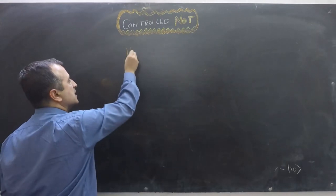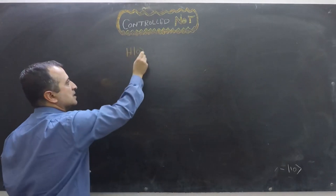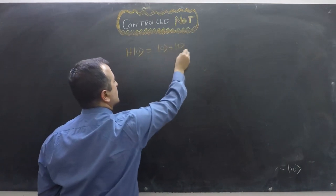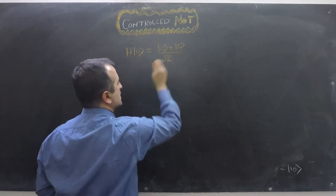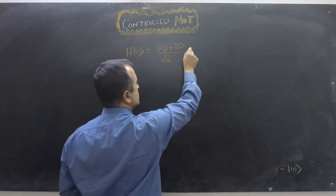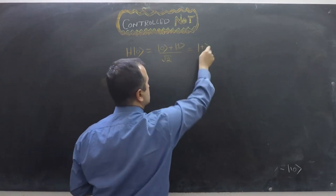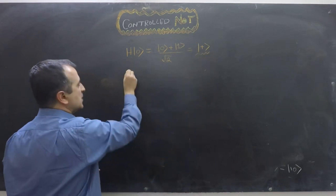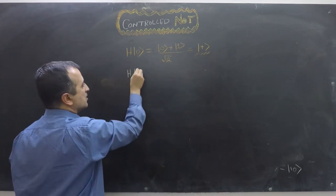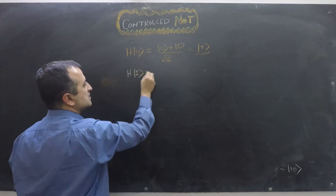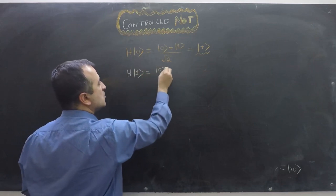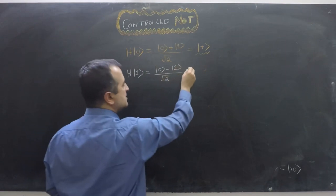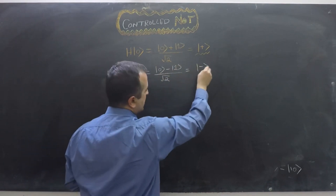Applying the Hadamard gate to |0⟩ gives (|0⟩ + |1⟩)/√2, referred to as |+⟩. Applying the Hadamard gate to |1⟩ gives (|0⟩ − |1⟩)/√2, referred to as |−⟩.